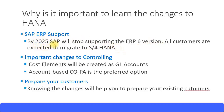By 2025, SAP will stop supporting the ERP 6 version, so customers will have to migrate to S4HANA. The current ERP version is ERP 6 with enhancement pack 8. Whatever new enhancement packs come across, by 2025 SAP will stop support for the entire ERP 6 version, and customers are expected to migrate to S4HANA.